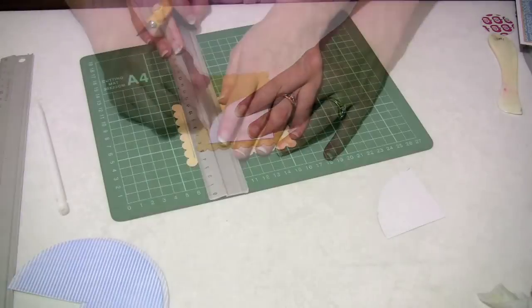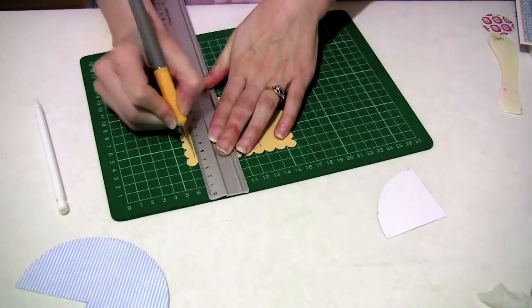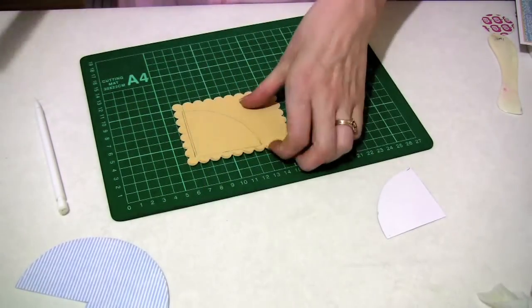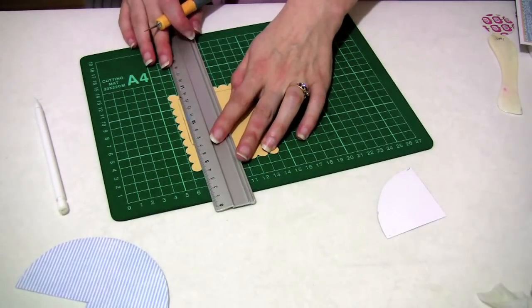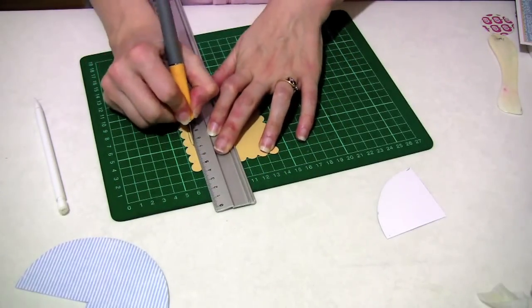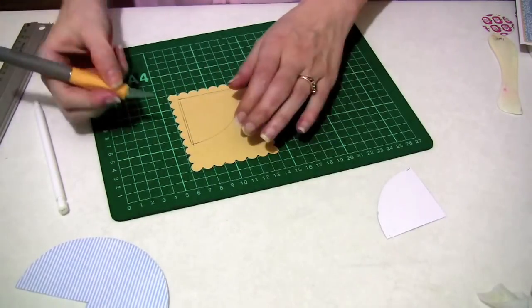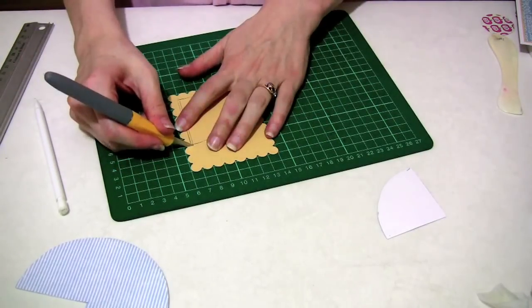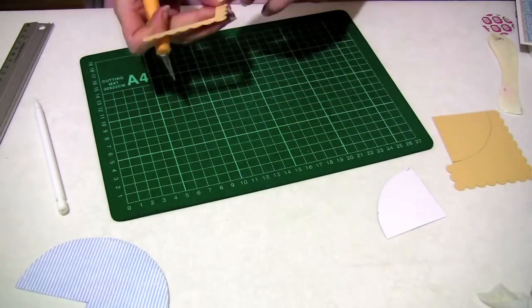Then we'll cut this out. I'm just using a craft knife and a ruler but you can use some scissors if you prefer. The reason I use the scallop rectangle instead of scallop scissors is because I wanted that perfect circle at the end, at the corner. So let's trim this down and this will be stuck down onto my pram like this.